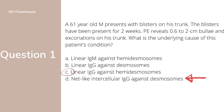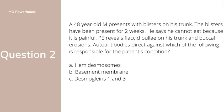Question 2: A 48-year-old man presents with blisters on his trunk. The blisters have been present for 2 weeks. He says he cannot eat because it is so painful. Physical exam reveals flaccid bullae on his trunk and buccal erosions. Auto-antibodies directed against which of the following is responsible for the patient's condition? If you want to take a moment and figure out the answer yourself, pause the video right here. The answer is option C — desmoglein 1 and 3.